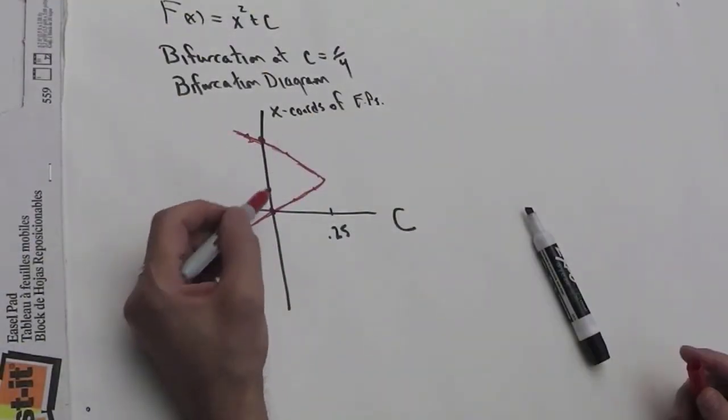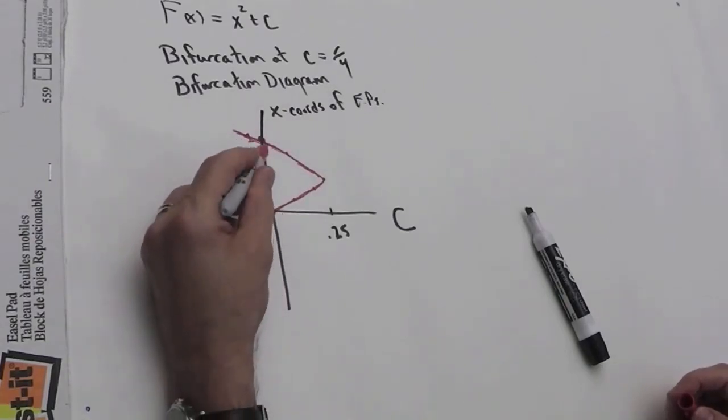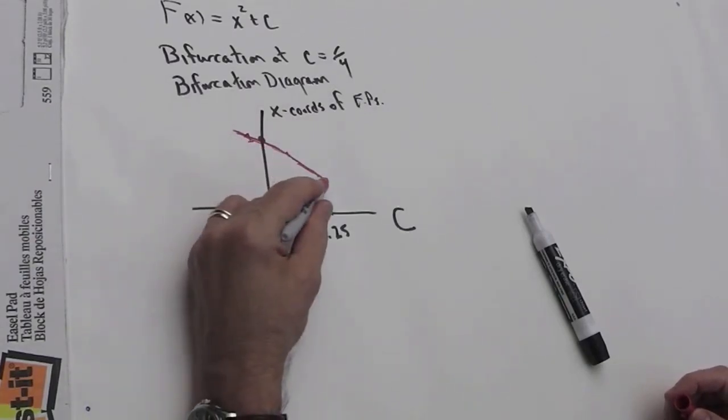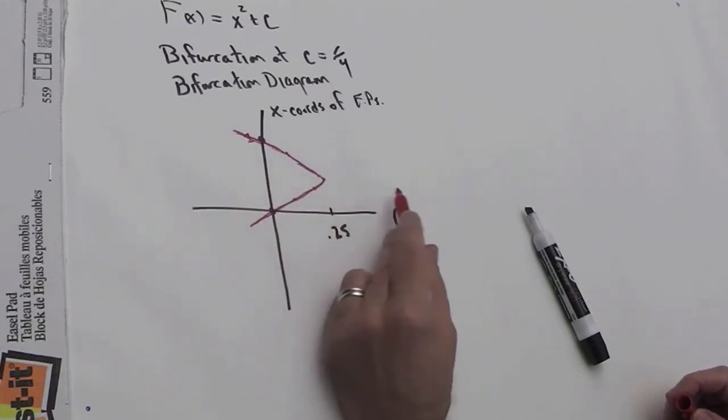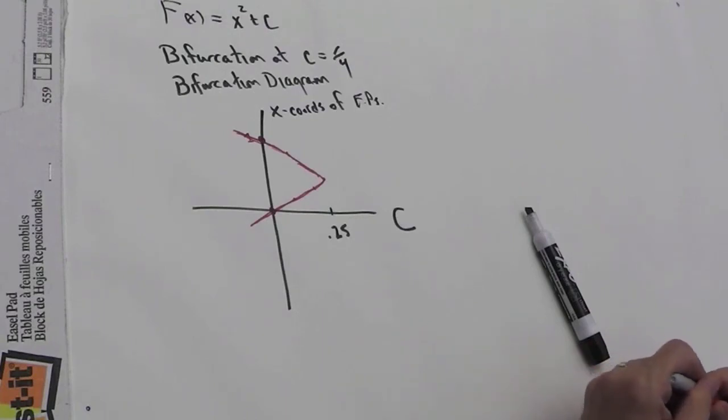So, this graphically depicts the coalescing of the two fixed points into one and then disappearing entirely for c bigger than 0.25.